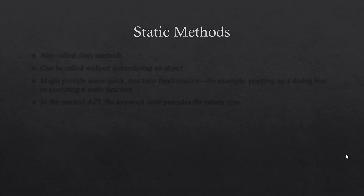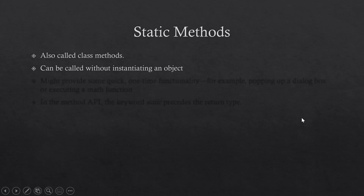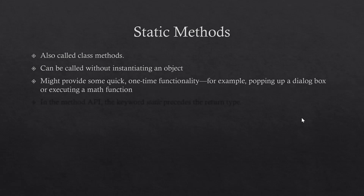So far, when we wanted to use methods, we needed to create an object of the class to be able to use those methods. Static methods are different. We also call them class methods because they belong to the class, and we do not need to create or instantiate an object to call them. They provide us with quick one-time functionality, for example, popping up a dialog box or executing a math function.